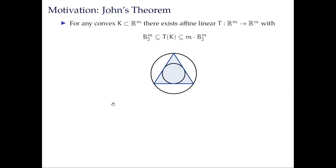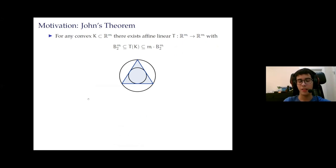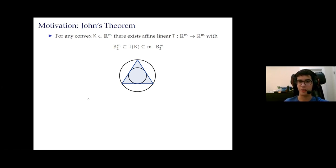I'm going to talk about some work I did with my advisor and a few other people this summer. Here's a brief motivation — this is a pretty cool result that got me interested in convex geometry. It's that any convex set can always be transformed such that it includes the unit ball and is included in a ball that's m times larger if it's in m dimensions. For example, this triangle in two dimensions contains a circle and is contained in a circle that's two times larger in radius.